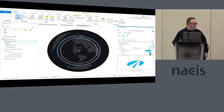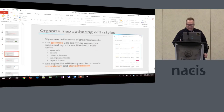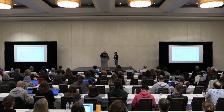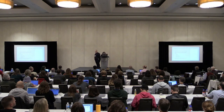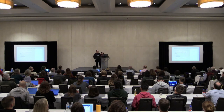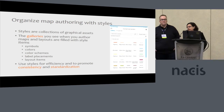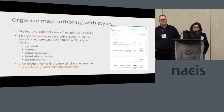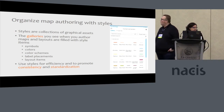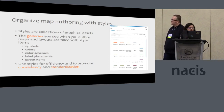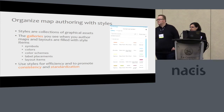Edie's going to talk about organizing those symbols. Symbols are really powerful in ArcGIS Pro. The other thing we can talk about is styles — styles are collections of symbols. Styles are how we organize our work in ArcGIS Pro; it's not just symbols, but all of your map assets. All the colors, color schemes, label placements, and layout items you use in ArcGIS Pro can be stored in styles. Styles are a really good way to organize yourself and promote consistency across your work.